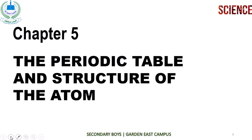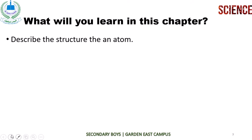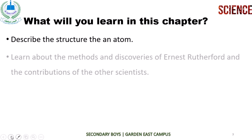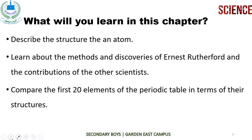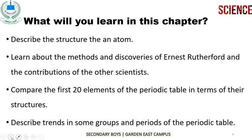The name of Chapter number 5 is the Periodic Table and the Structure of the Atom. In this chapter, we will describe the structure of an atom. We will learn about the methods and discoveries of Ernest Rutherford and the contributions of other scientists.